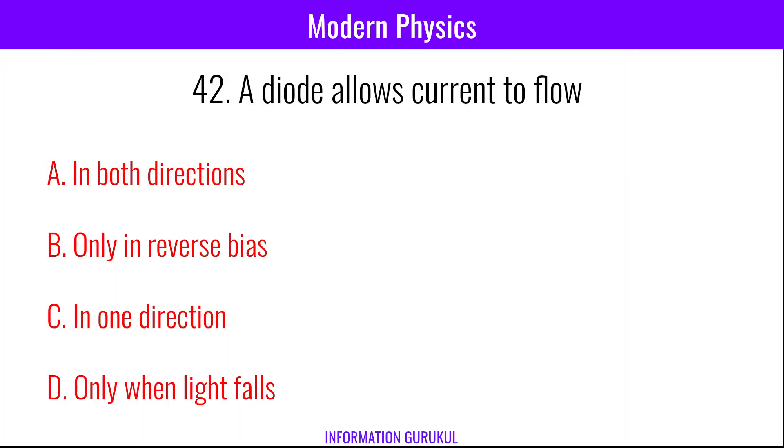A diode allows current to flow in one direction.